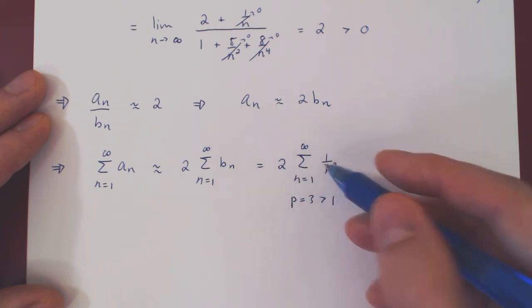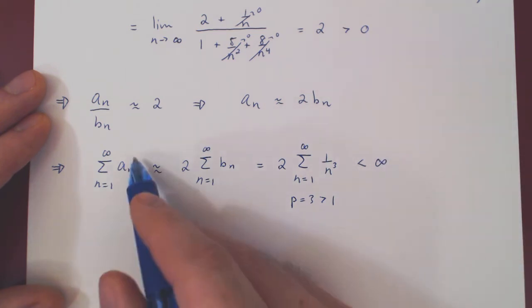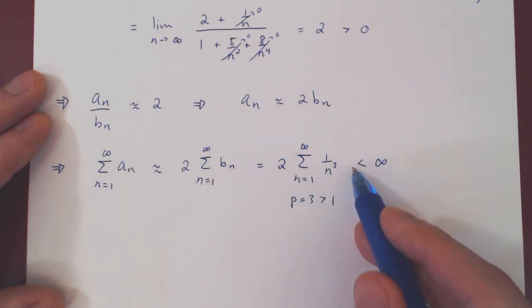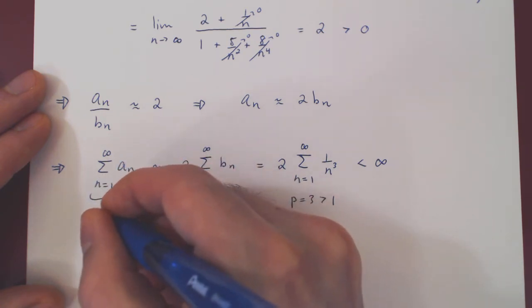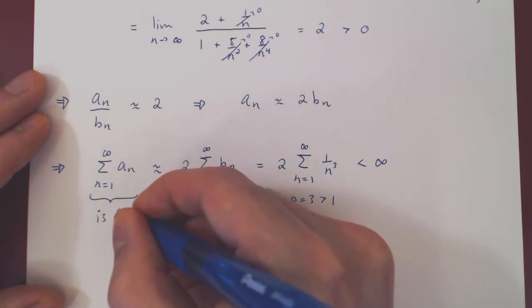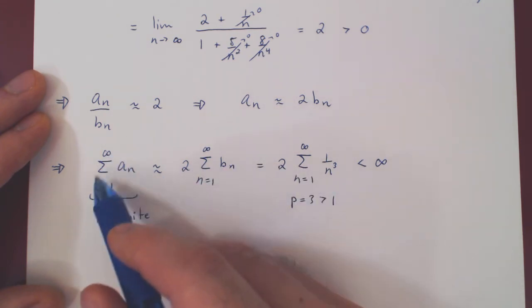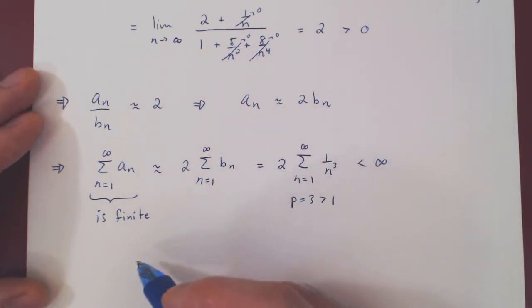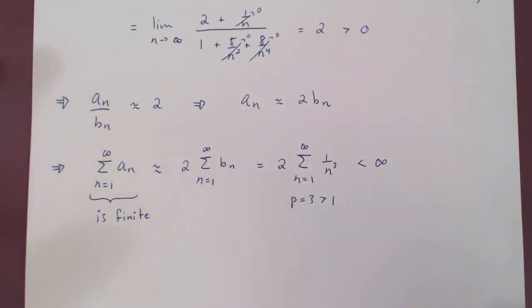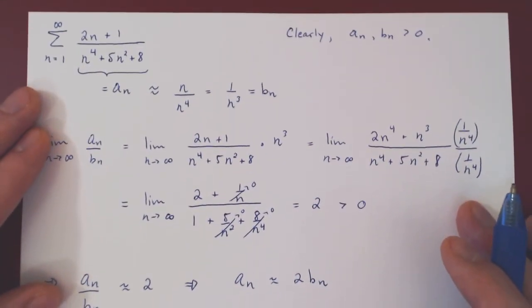So 2 times a real number is a real number, therefore is finite. So the original series is finite less than infinity. But as we have a series of positive terms, if it is finite, it therefore converges. And so we're done by the limit comparison test.